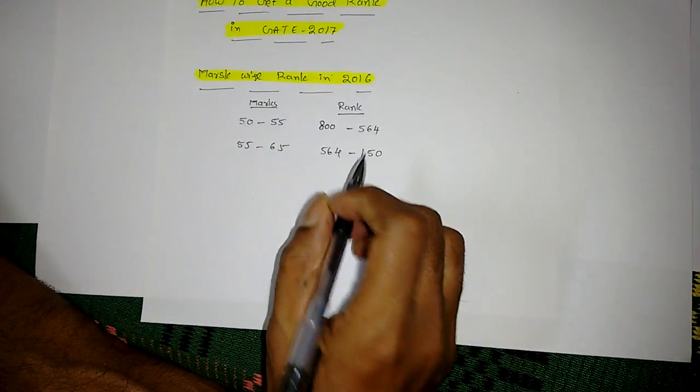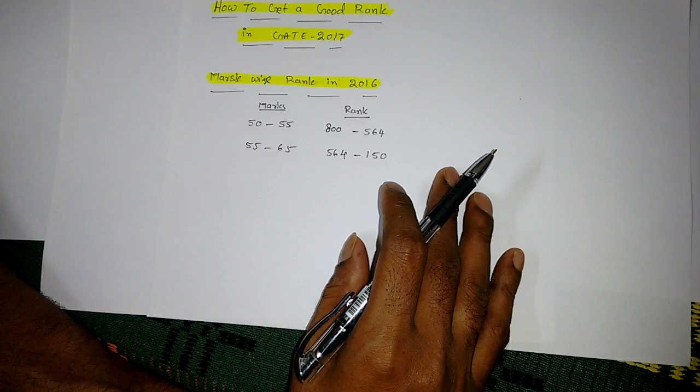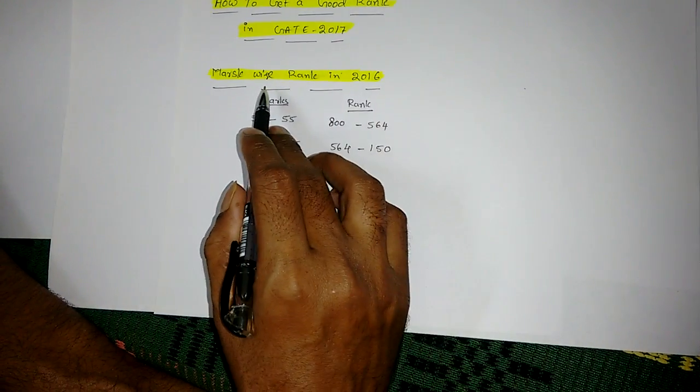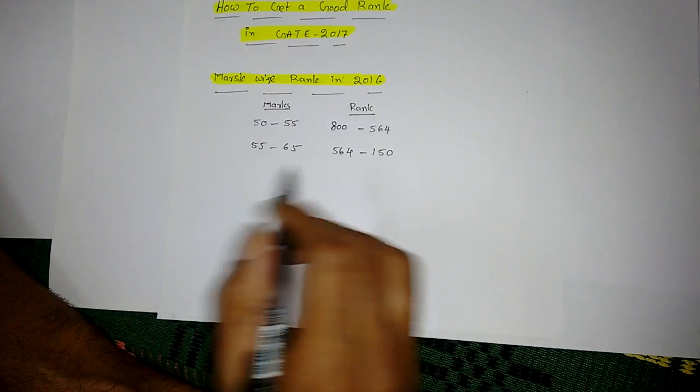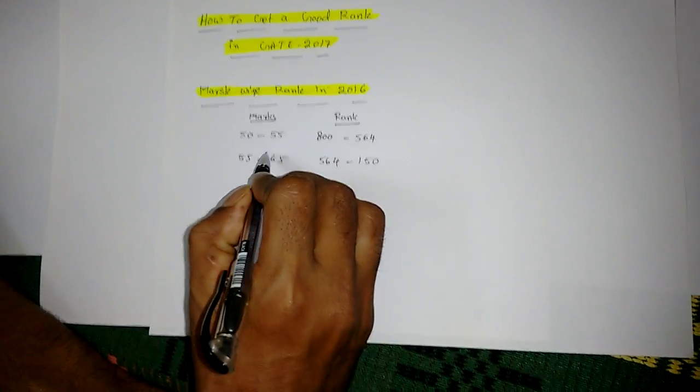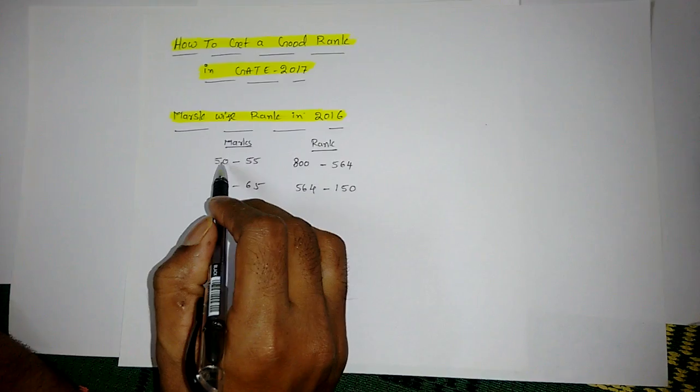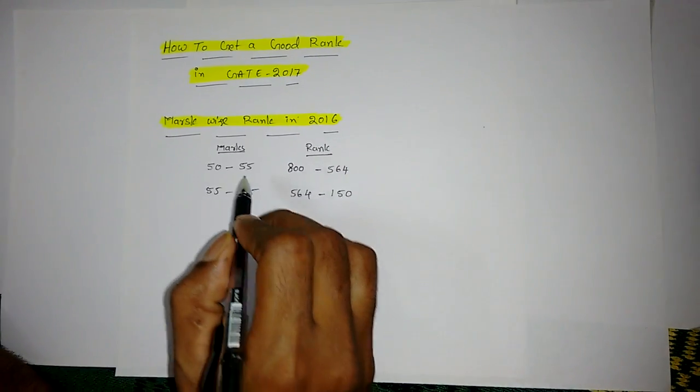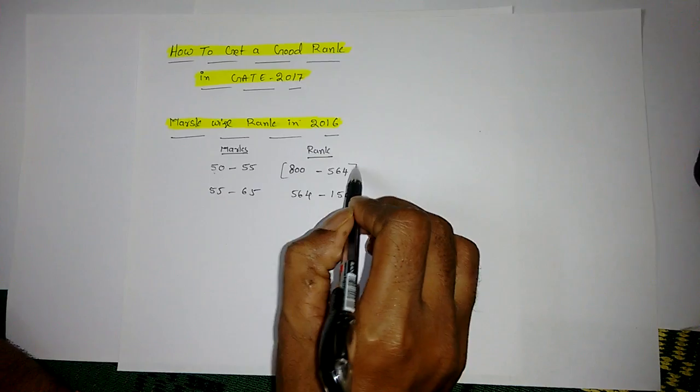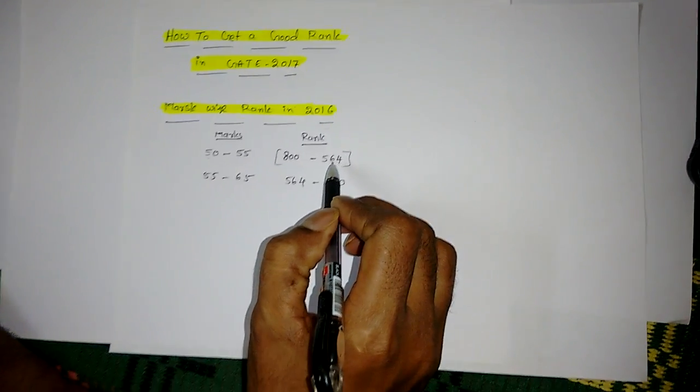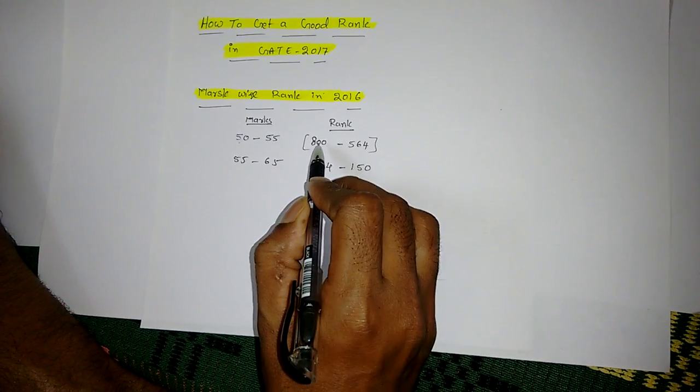In this video I'm going to tell you about how to get a good rank in GATE 2017. If you see the GATE max phase performance in GATE 2016, this is for normalized marks. There were four sets, so normalized marks will be there. Between 50 to 55 marks there was 800 to 564 rank, meaning if you get 50 marks you will get 800 or near 800, and near 55 marks you will get near 550 to 500 in range.